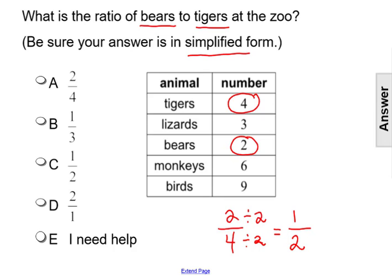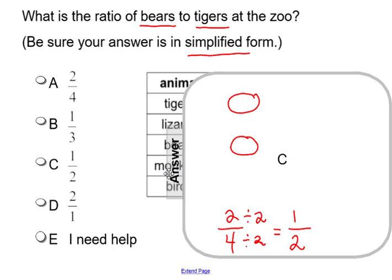So that means our answer isn't choice A, but rather our ratio is C, one half.